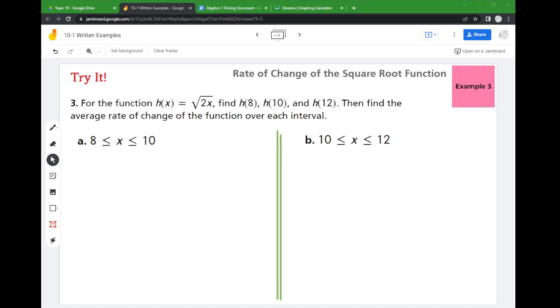But now instead of it being just a square root of x, it's a square root of 2x. So let's go ahead and try this out. So they give us two separate intervals. This first interval is from 8 to 10. I want to call this one our blue one.